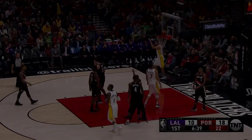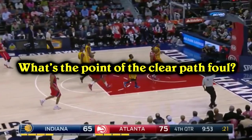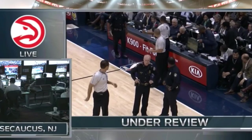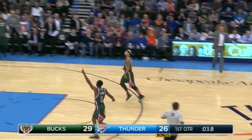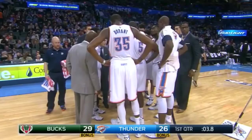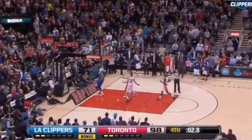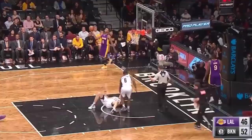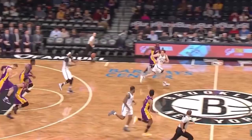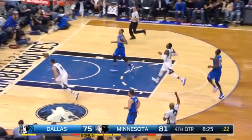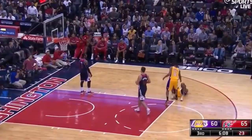For those wondering why the clear path foul is even a thing — I mean two free throws and possession is pretty crazy, that's basically a flagrant two — the clear path foul was created so players don't get hurt. When someone's running down the court at full speed and gets fouled or pushed from behind, it's very dangerous. The clear path foul is supposed to prevent situations like that from happening because there's a big penalty to discourage players from committing a foul like that. Another reason is that the NBA wants to see more exciting highlights. Fast break dunks and alley-oops are the most exciting parts of the game — fans want to see that. If someone gets fouled in transition before it happens, well, that ruins the moment. So that's another reason why the clear path foul discourages defenders from fouling in transition.